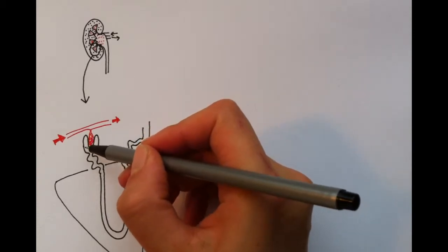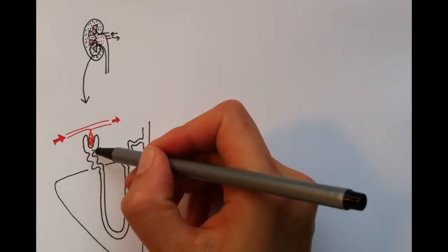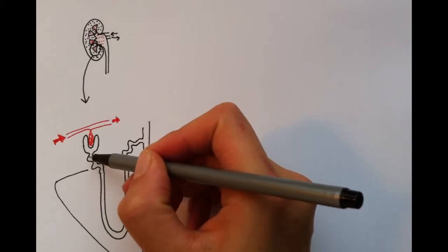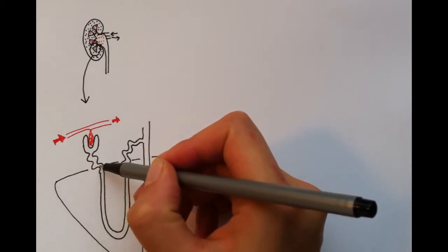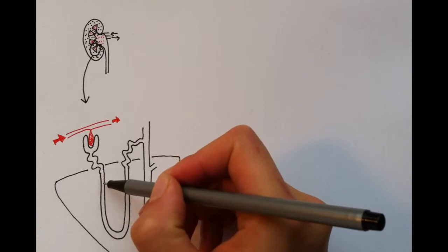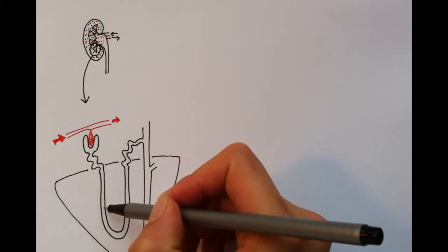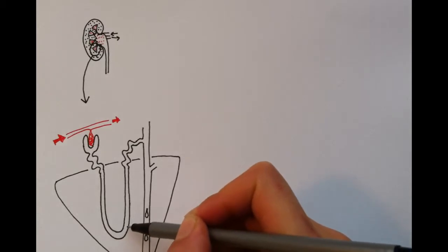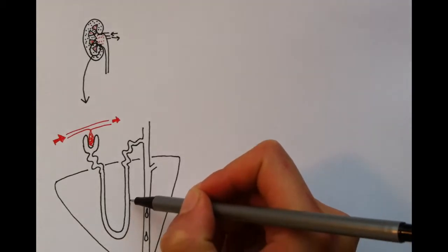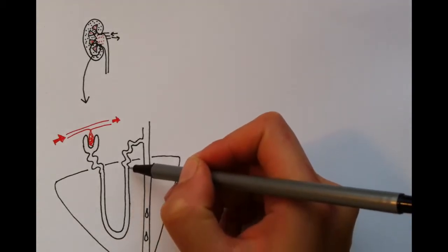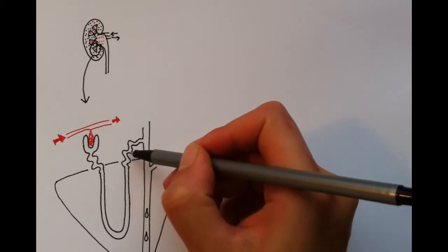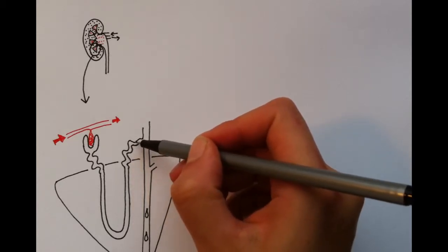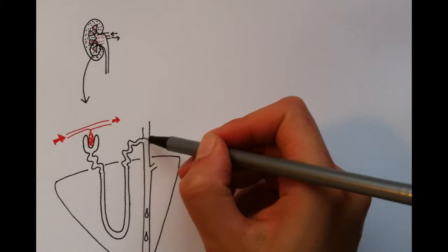The filtrate enters the proximal convoluted tubule, where reabsorption of ions, water and organic nutrients occur. It then descends into the loop of Henle, which plunges into the medulla. This is where urine is concentrated by the reabsorption of water as it descends and the absorption of sodium and chloride as it ascends, setting up a concentration gradient. The distal convoluted tubule leads on from the loop of Henle, where selective secretion and absorption occurs to help maintain pH and electrolyte levels in the blood.